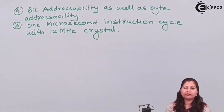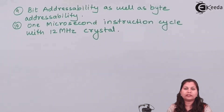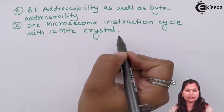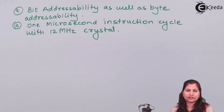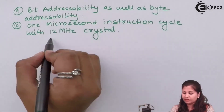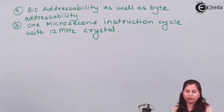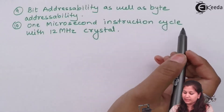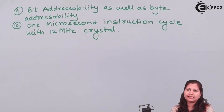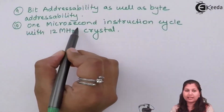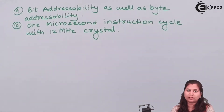In a microcontroller, a crystal provides the clock frequency. In 8051, we have a 12 megahertz crystal which provides the clock frequency used in instruction cycles. Because of this high-frequency crystal, it provides an instruction cycle of one microsecond, meaning the speed of execution of instructions is very fast — taking only one microsecond to execute an instruction.